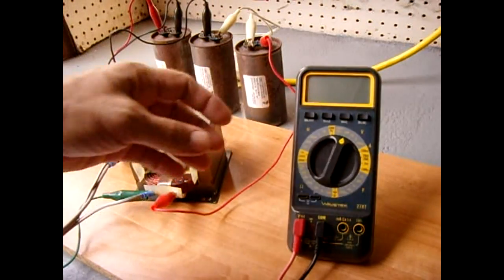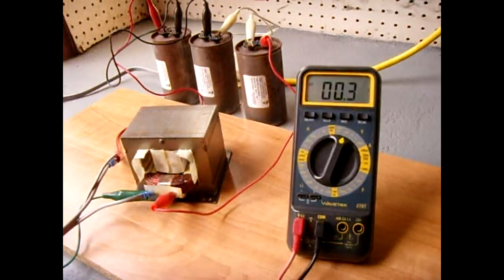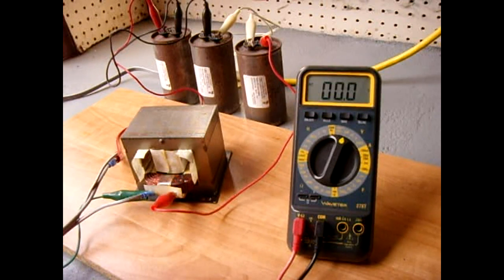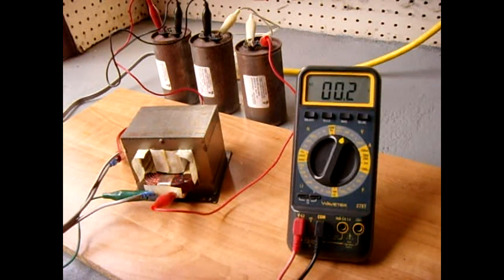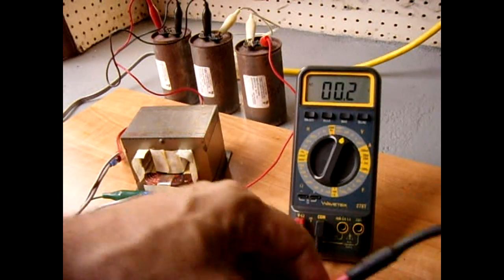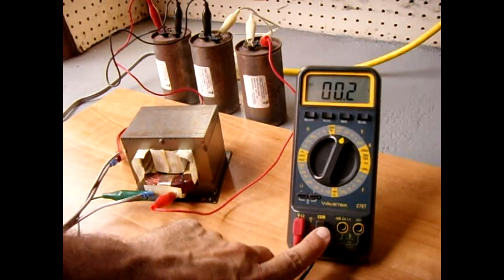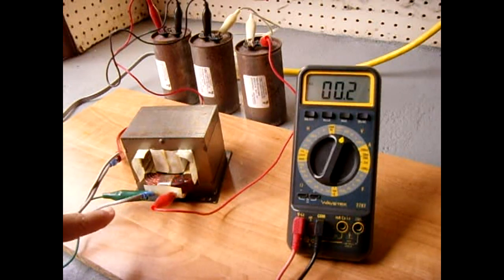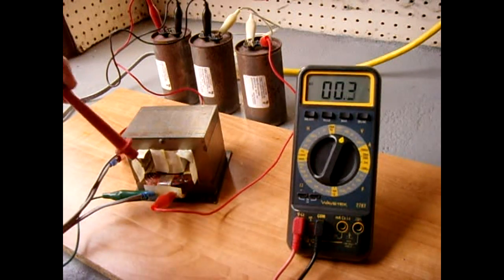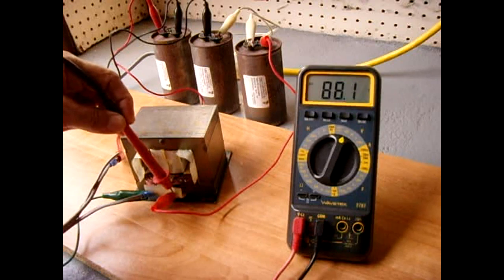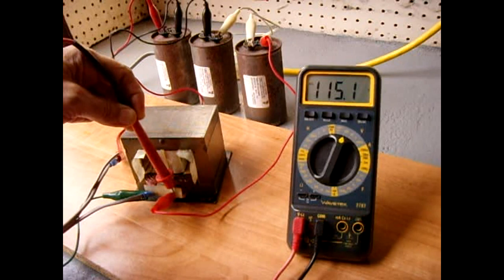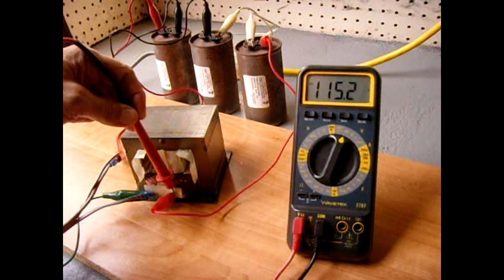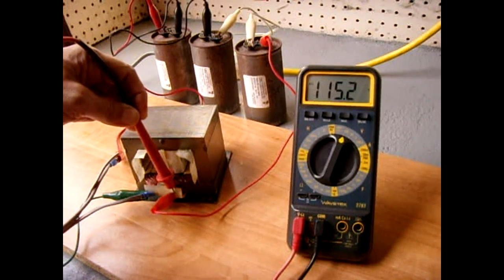Let me turn it on just to show you. Have 120 here, the transformer coming. Alright, I already have the common connected to the neutral on the transformer - that's the green lead. Let's measure to the other terminal, and we have around 115 volts, just to show you there's 115 going into that winding.